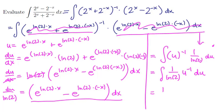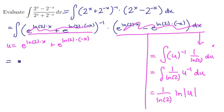The 1 over ln of 2 is a constant, comes along for the ride. The antiderivative of u to the minus 1 is natural logarithm of absolute value of u, and now we can back substitute.